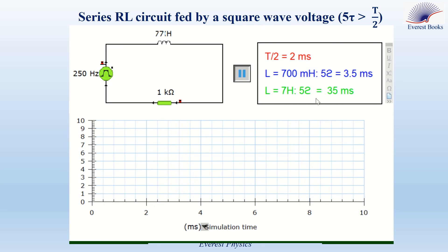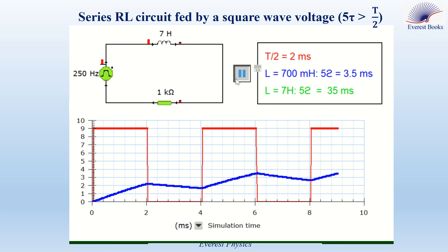5τ becomes 35 ms, which is much greater than 2 ms. So the curve representing current as a function of time during growth and decay can be considered a straight line, or the current varies linearly with time. Thank you.